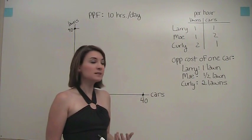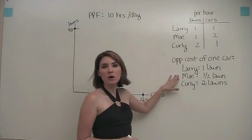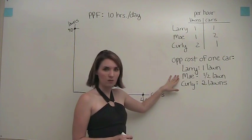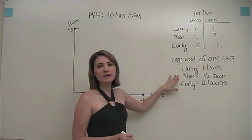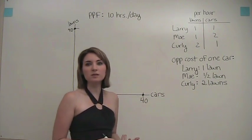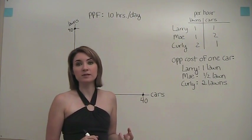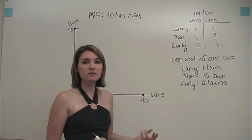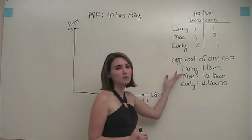What we noticed here is that Moe has the lowest opportunity cost of car washing, so it would make sense for him to be the first one to switch over to washing cars, since he could do so at the lowest opportunity cost. Let's see what happens when we choose to move Moe from lawn mowing to car washing.